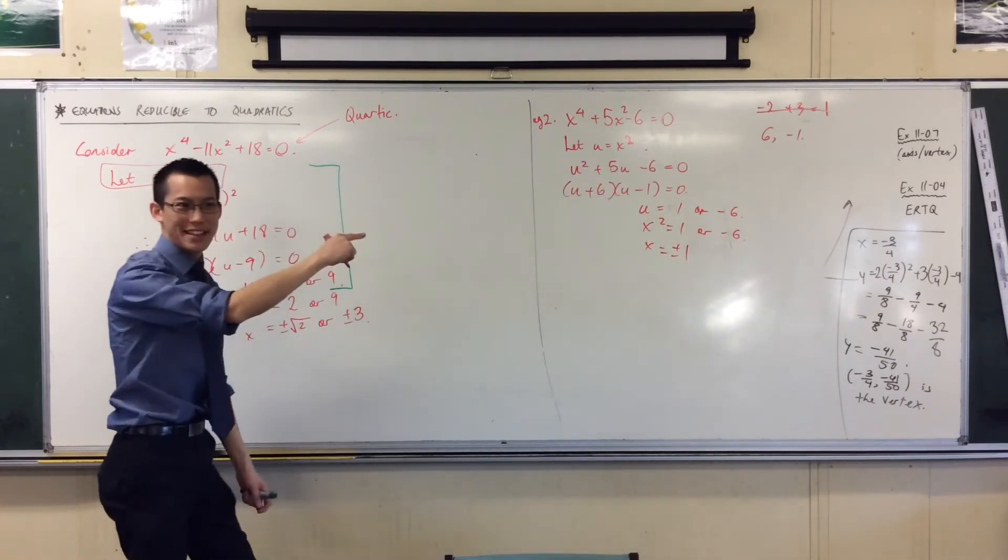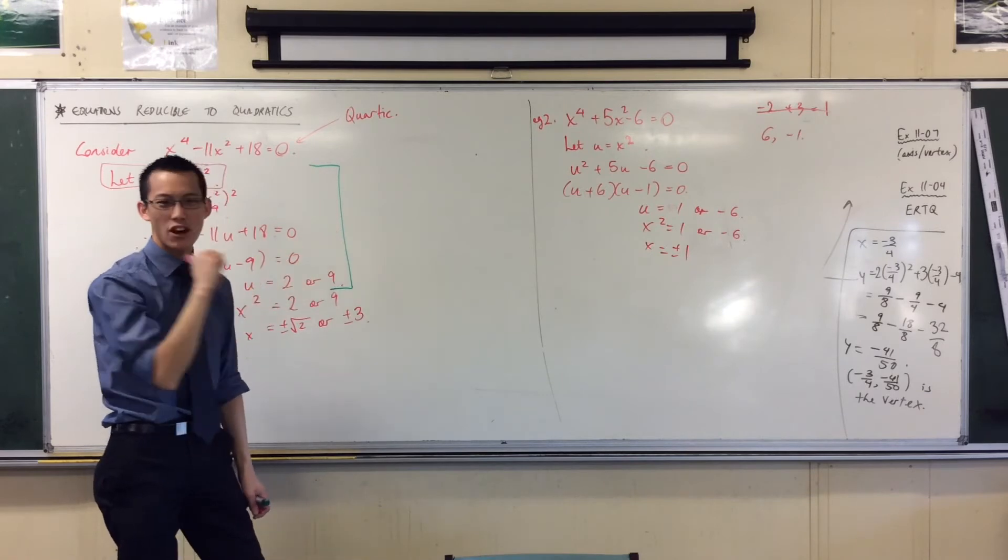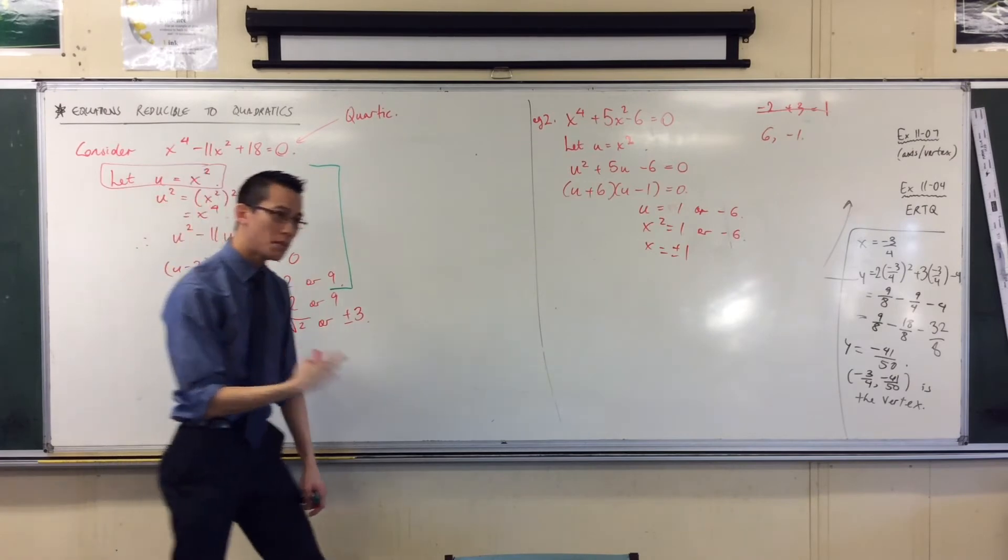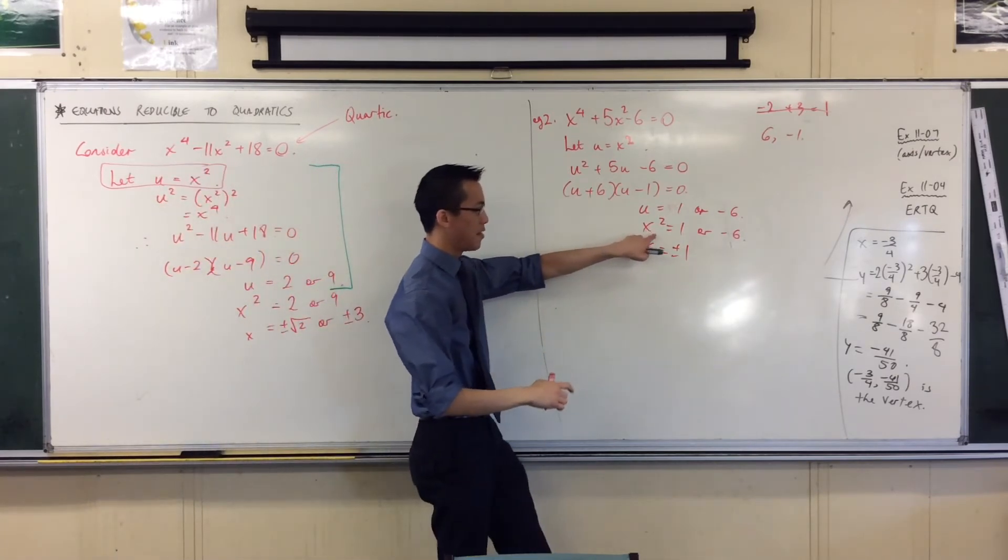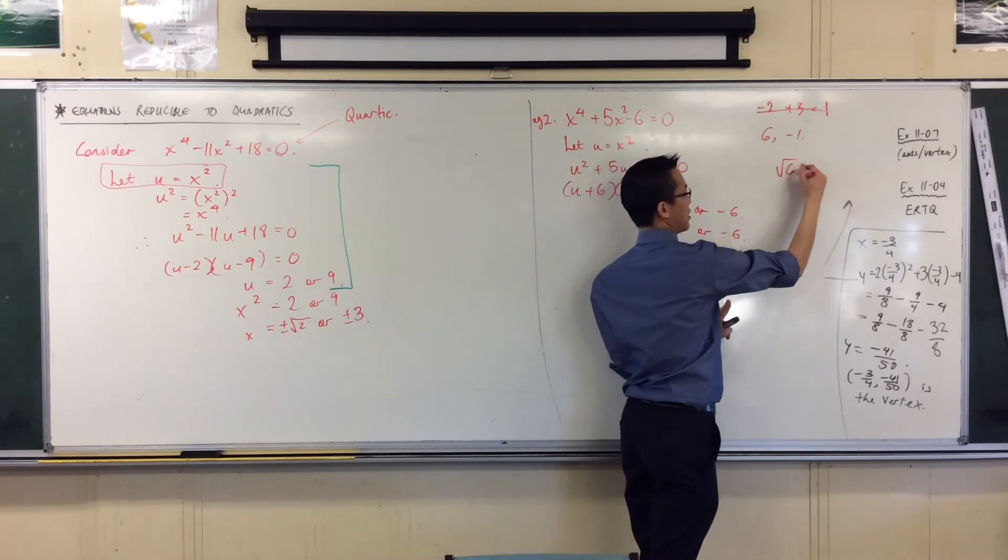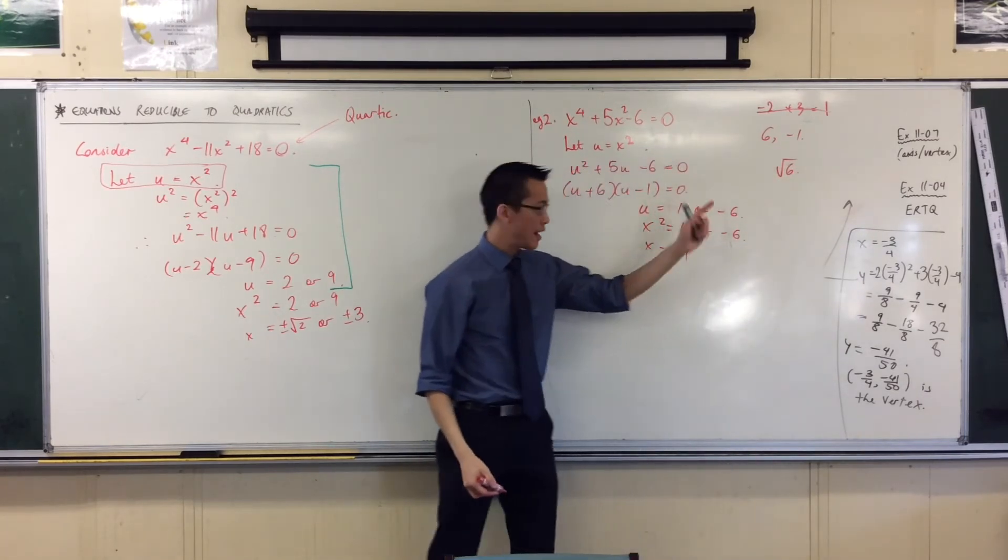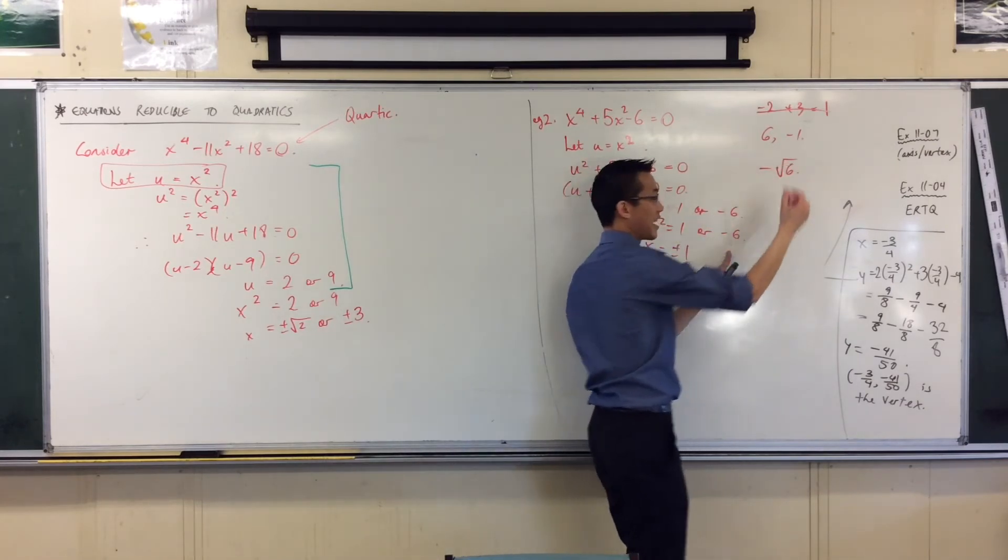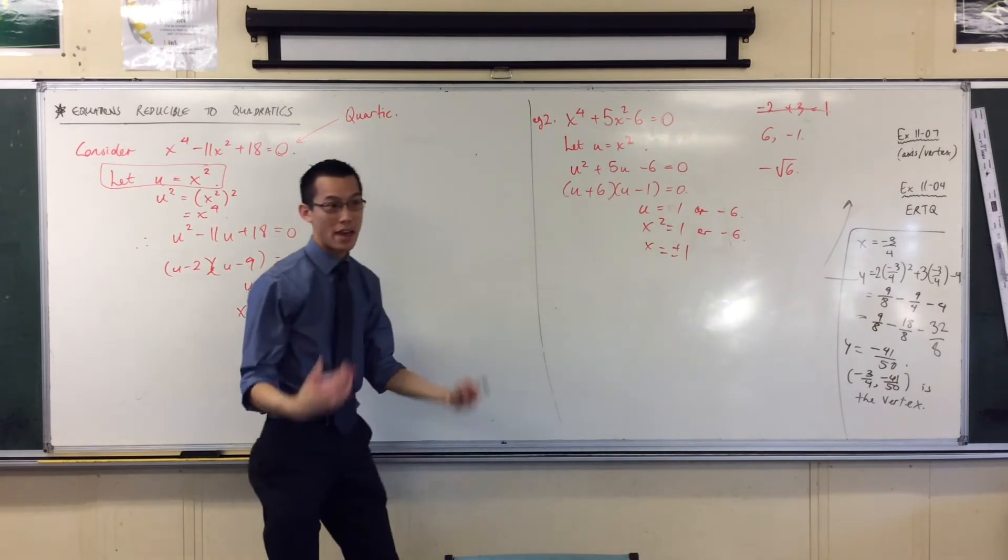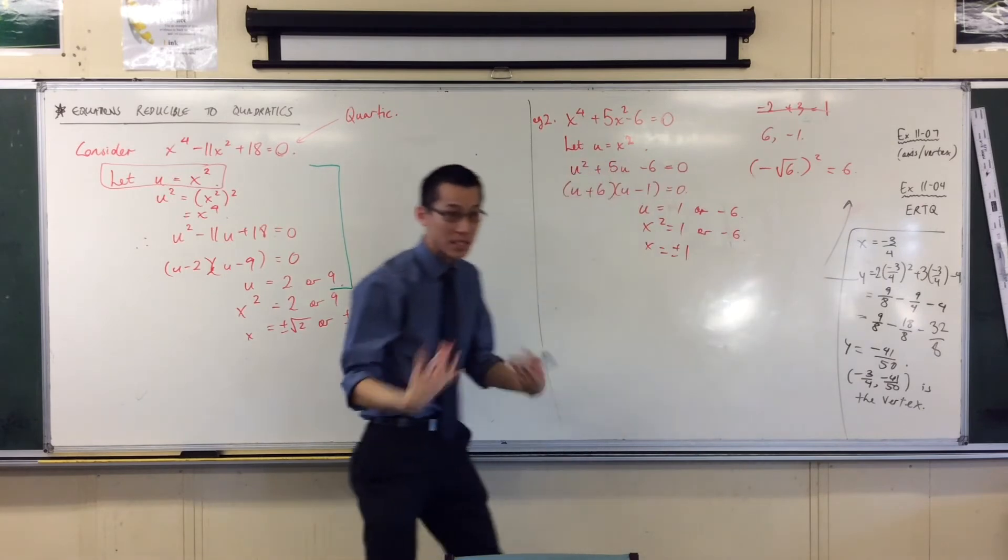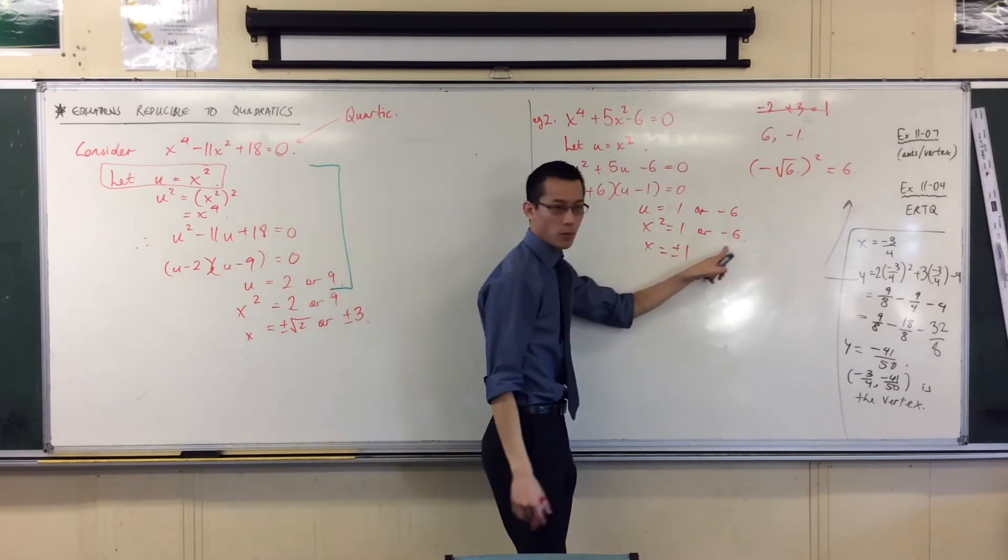Okay, but then you get to this next part and you say, hold on a second. There's no number, at least not that we're familiar with, there's no real number that when you square it gives you a negative. Because if you take the square root of 6, if you square that guy, you won't get negative 6. You'll get 6. If you take the negative square root of 6, if you square that, you're still in trouble because that double negative will cancel and you'll still get positive 6. There's nothing we can do to come up with an answer for this.